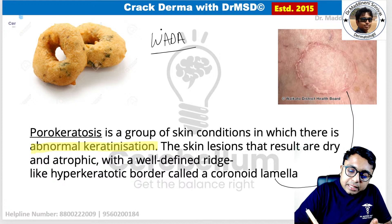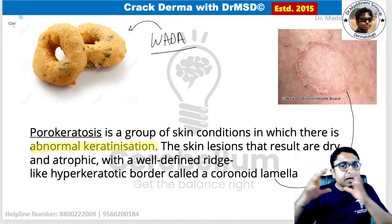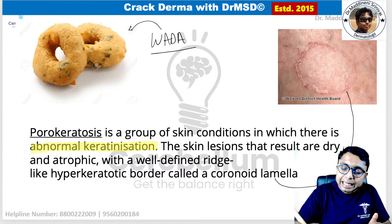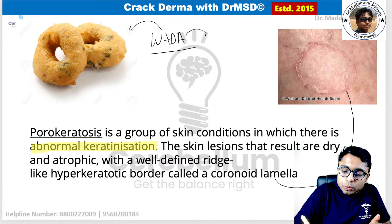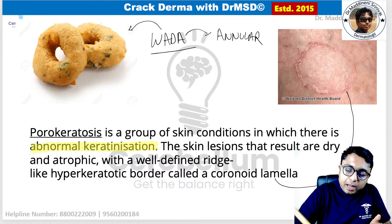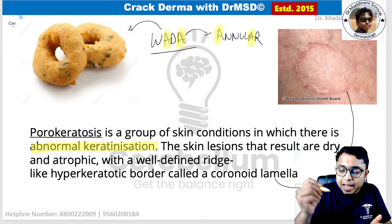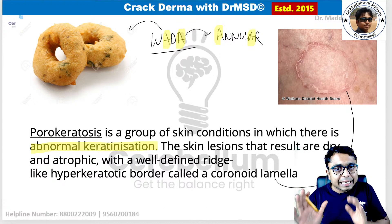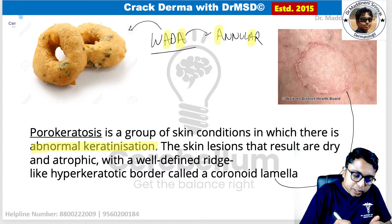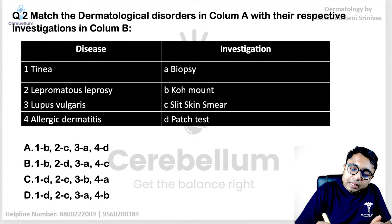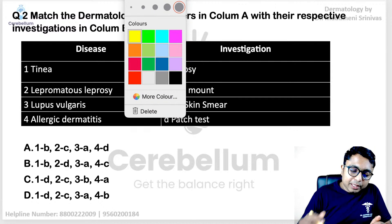You can remember the annular lesions with this simple trick: 'vada.' Just like in a vada, the periphery and the center are different; in annular lesions also, the center and periphery are different. The word 'vada' has two A's, just like 'annular' has two A's — this helps students remember it easily.